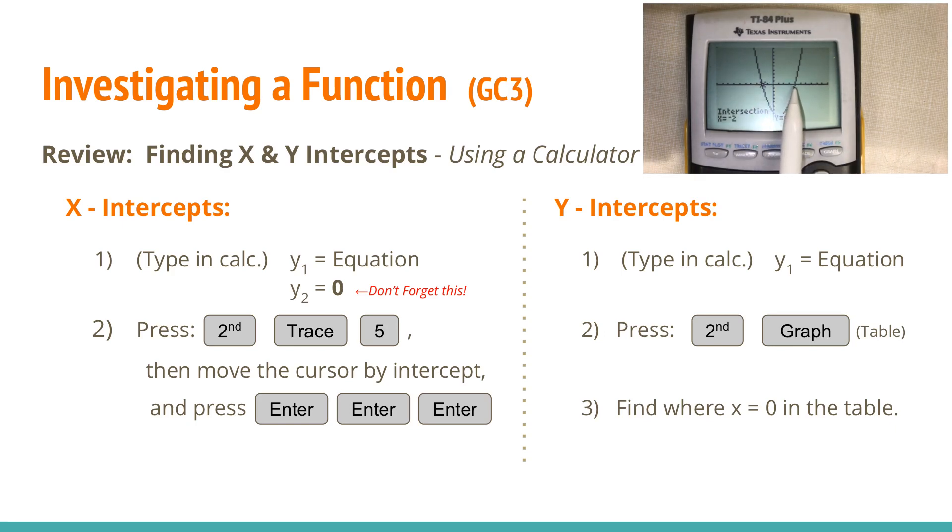Then if I want to find the other intercept over here, I would then press second trace 5, move the cursor over by the other location, and then press now that I'm closer over here, press enter, enter, enter, and that's the other x-intercept.